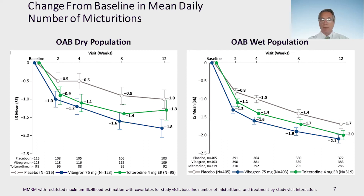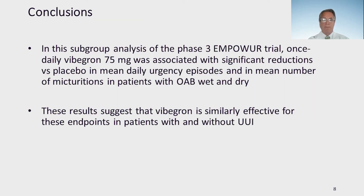Both OAB dry and OAB wet populations were statistically significant. In conclusion, in this subgroup analysis of the Phase III EMPOWER trial, once daily Vibegron 75 mg was associated with significant reductions versus placebo in mean daily urgency episodes and mean number of micturitions in patients with both OAB wet and dry. These results suggest that Vibegron is similarly effective for these endpoints in patients with or without urinary incontinence. Thank you.